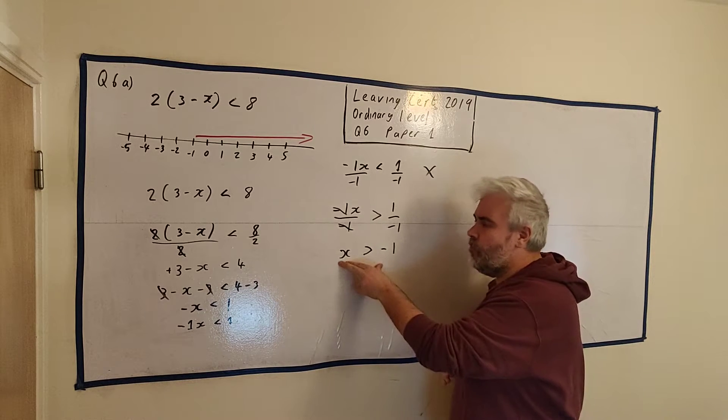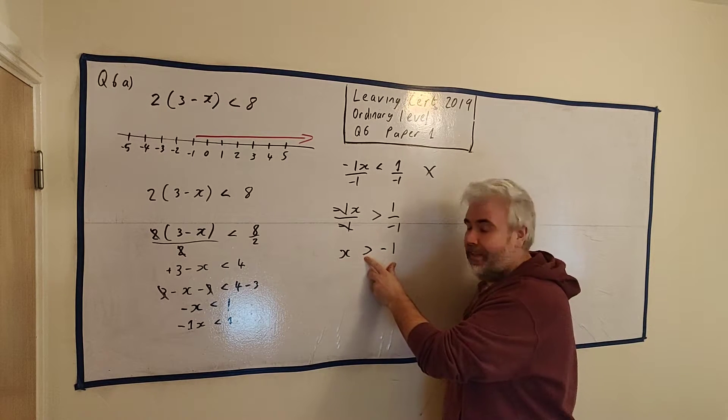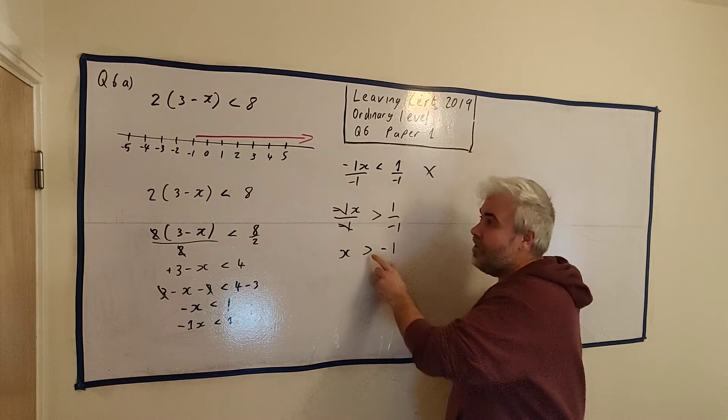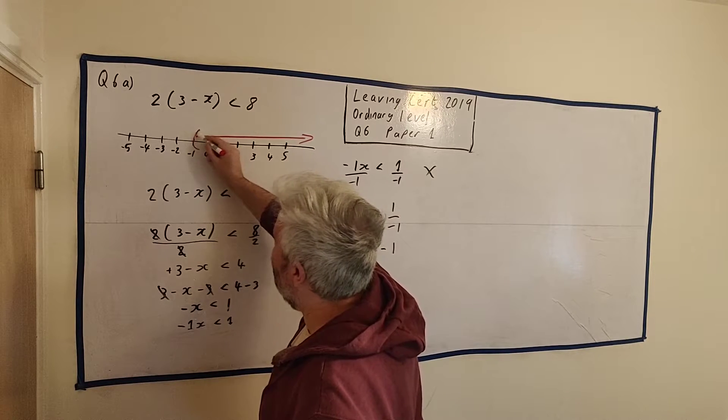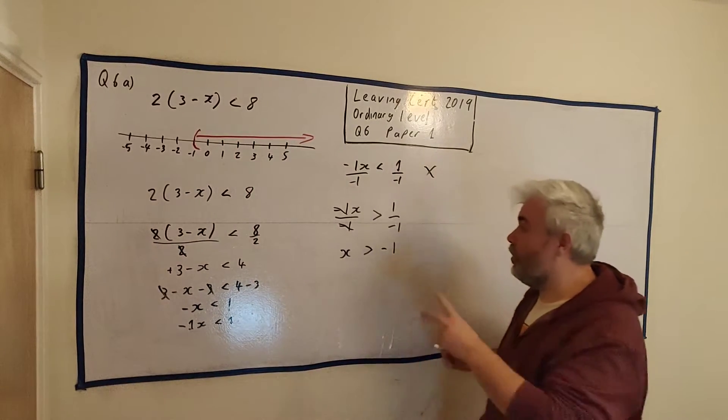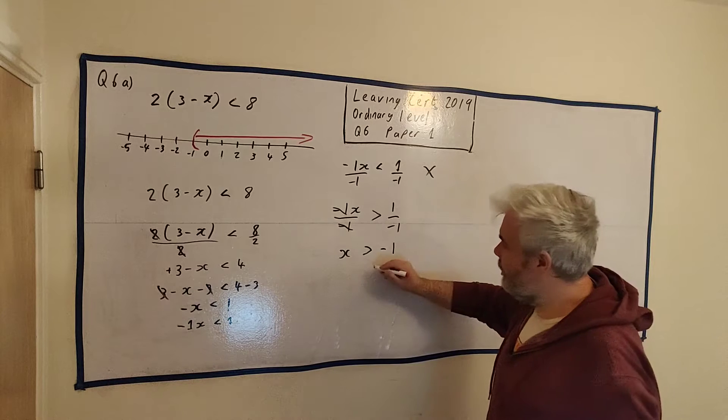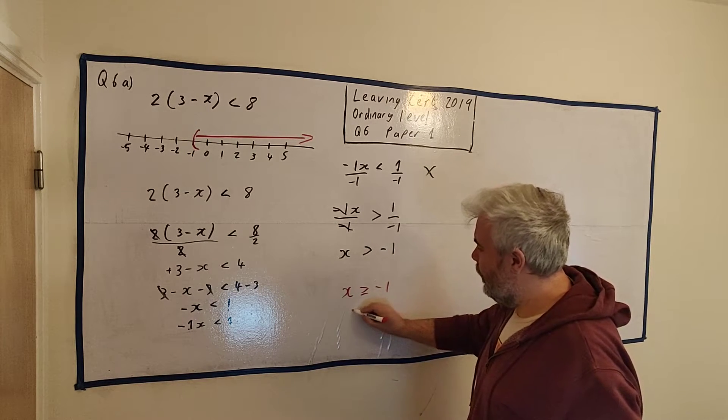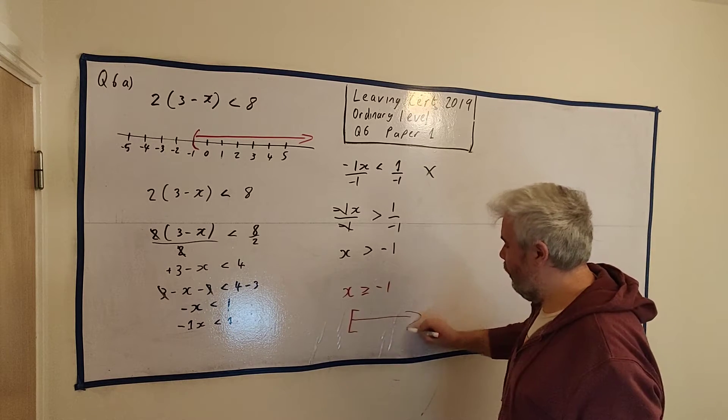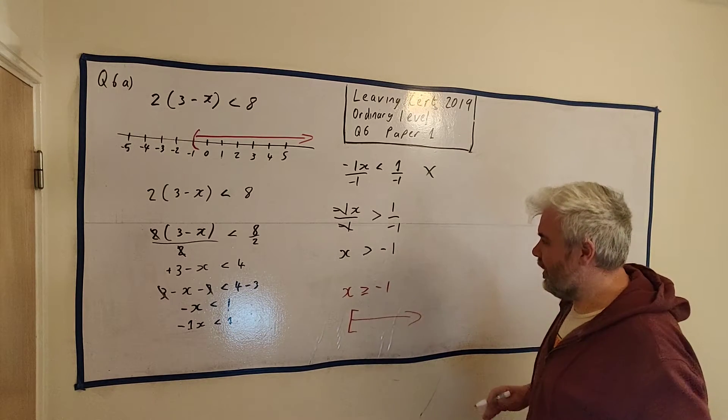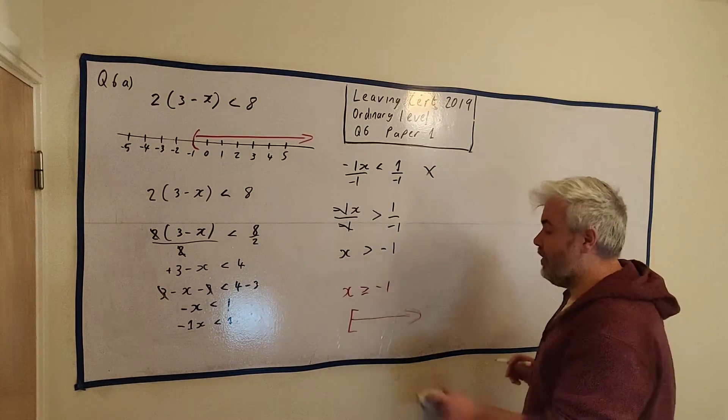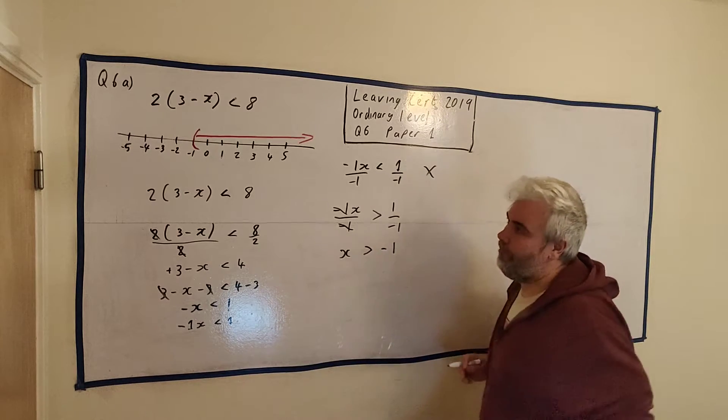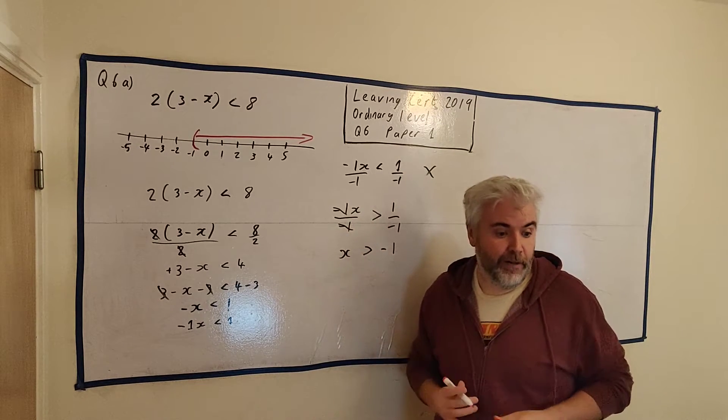There's one more thing. You need to tell them whether this is greater than or whether it's greater than or equal to. We'll do this by an open bracket. If this was x is greater than or equal to -1, we'd do a closed bracket like this with the same arrow there. So that's just a slight difference that you will lose a mark on if you do not do the correct one. Let me rub this out and we'll do part B.